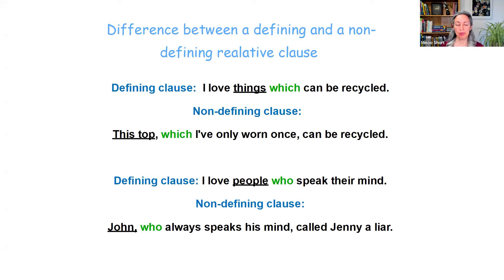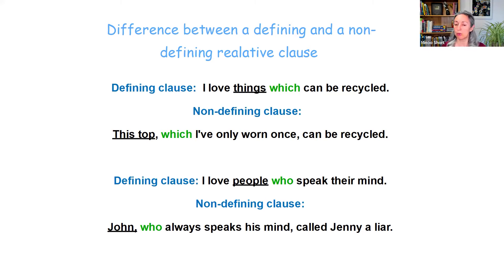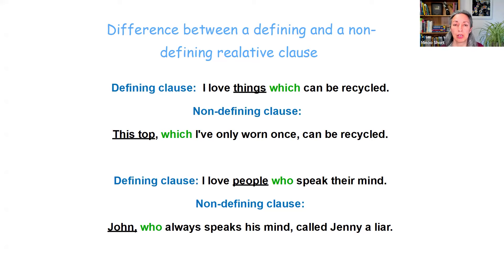Let's look at some examples. We had the defining clause: 'I love things which can be recycled.' A non-defining example would be: 'This top, which I've only worn once, can be recycled.' You can drop 'which I've only worn once' and you still have a complete sentence — 'This top can be recycled.' Another example: the defining clause 'I love people who speak their mind.' Let's change it to a non-defining clause: 'John, who always speaks his mind, called Jenny a liar.' You can drop 'who always speaks his mind' — it's just additional information — and say 'John called Jenny a liar.' We still know who we're talking about.